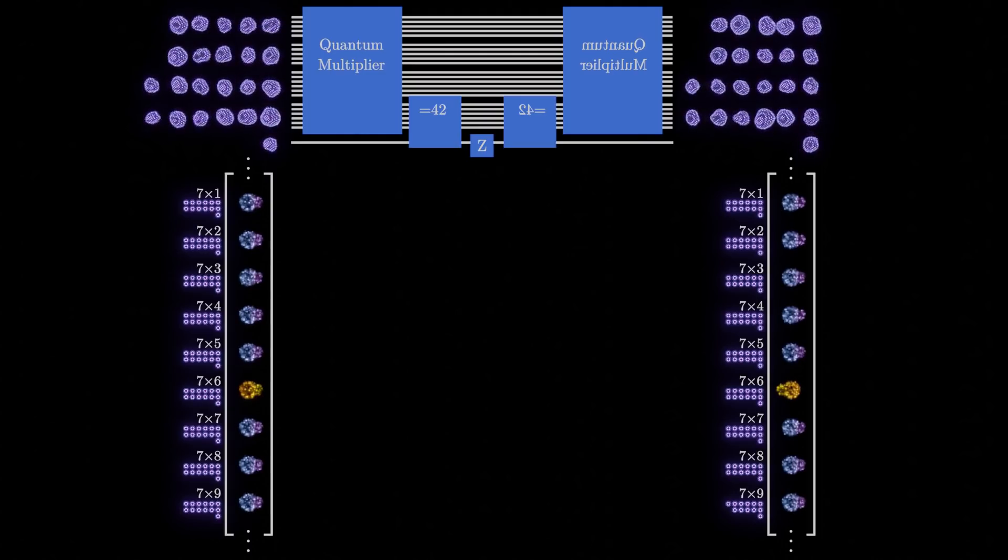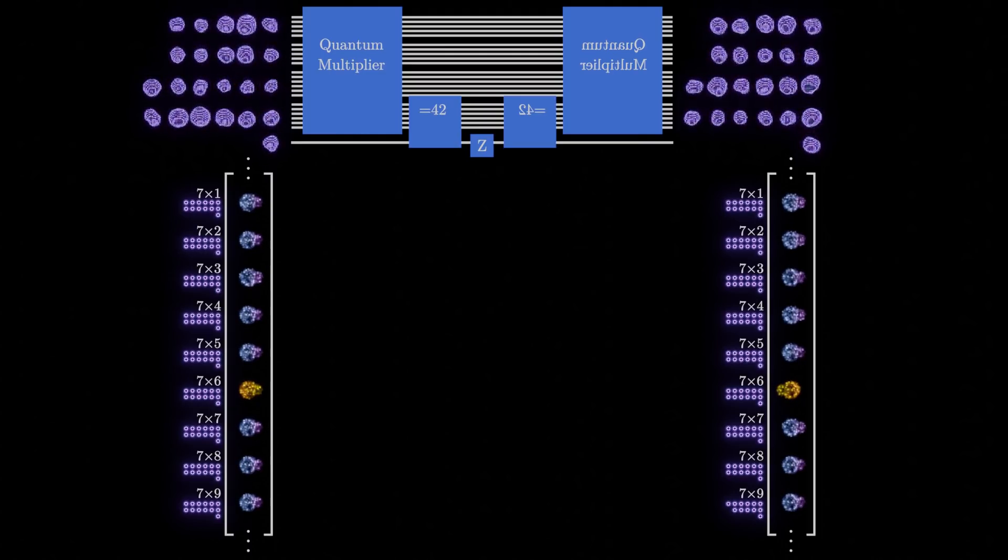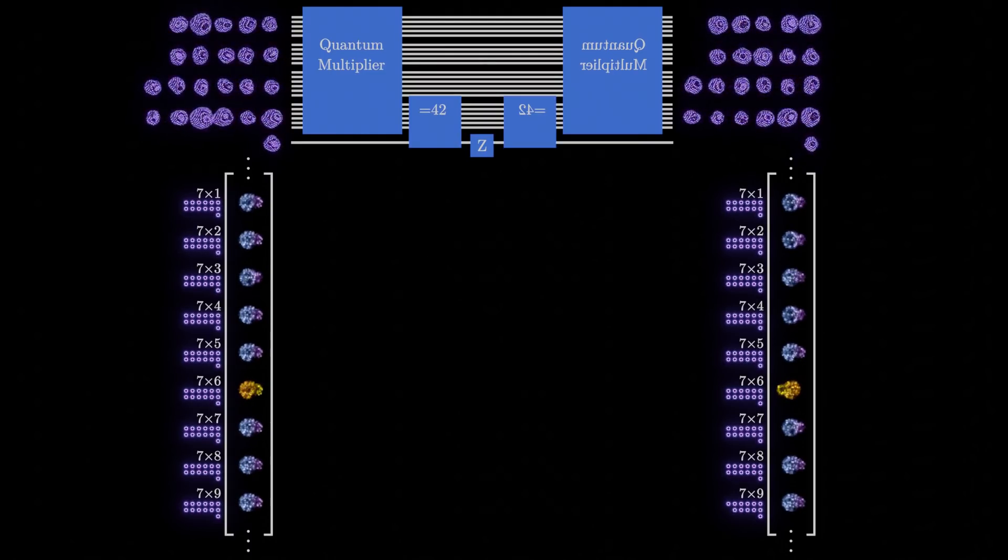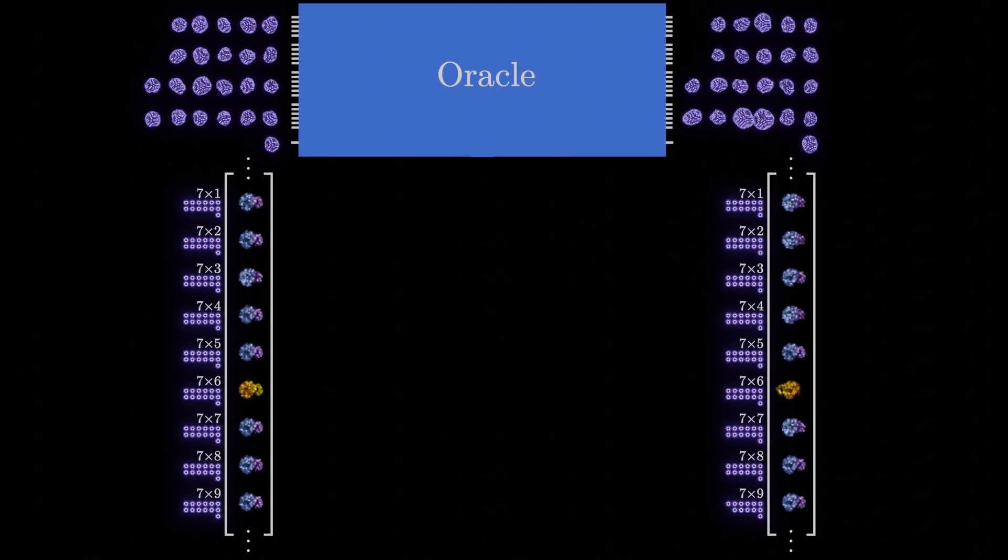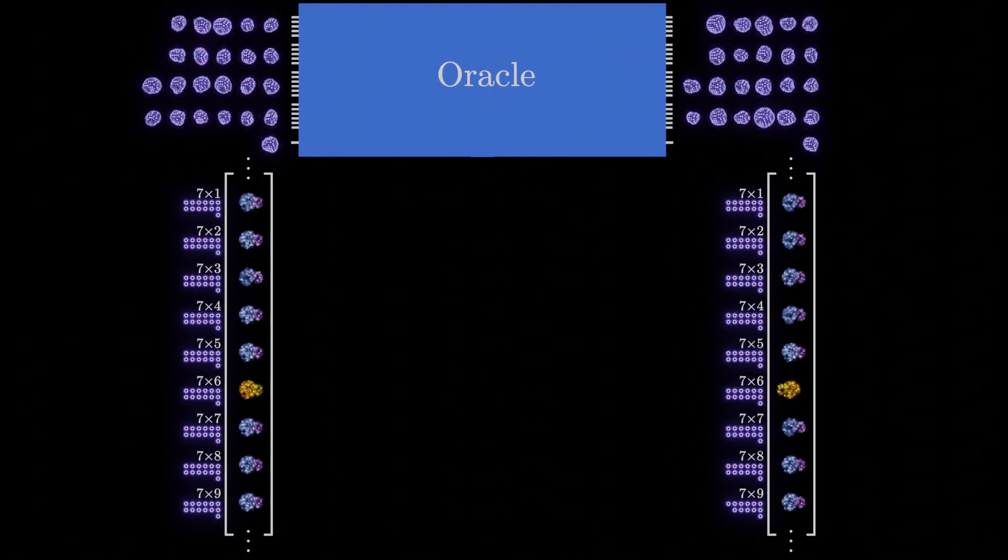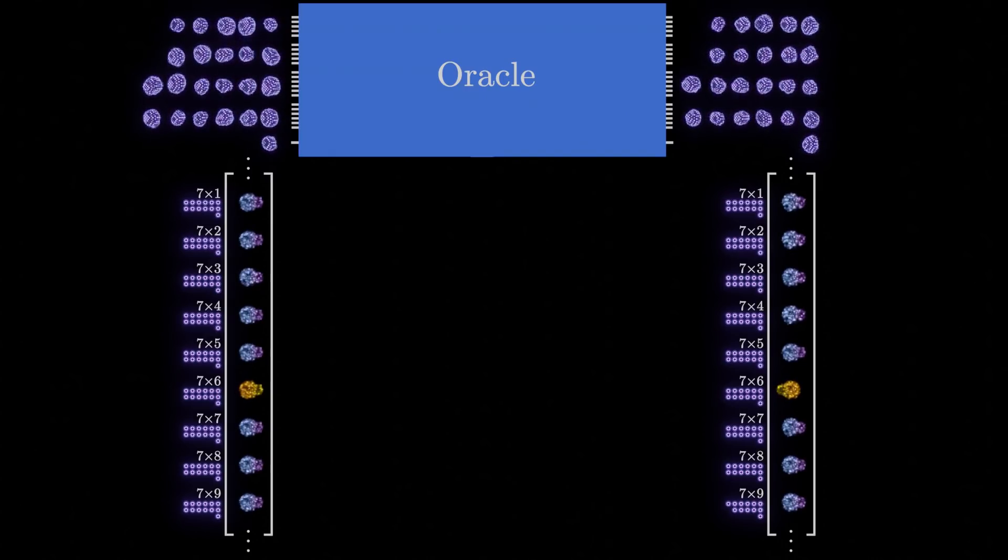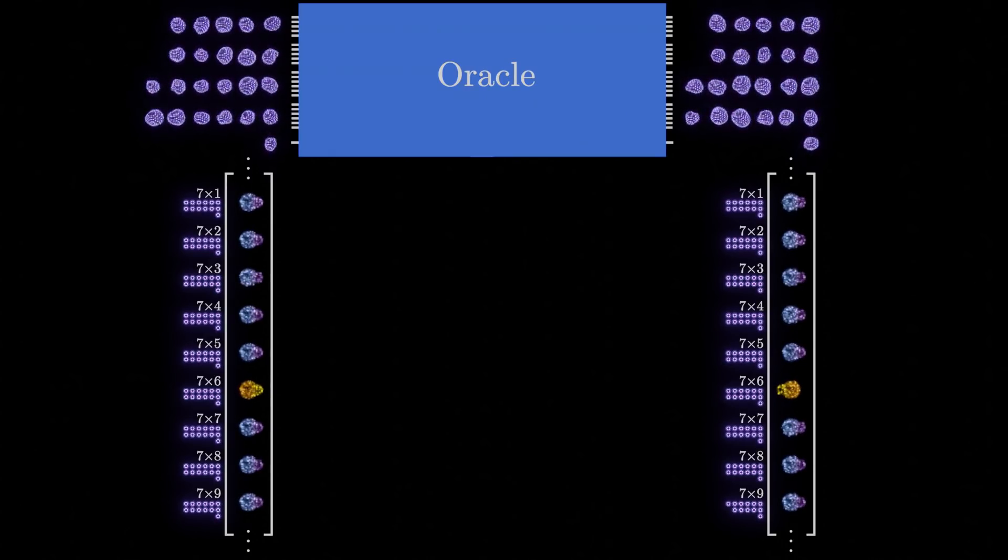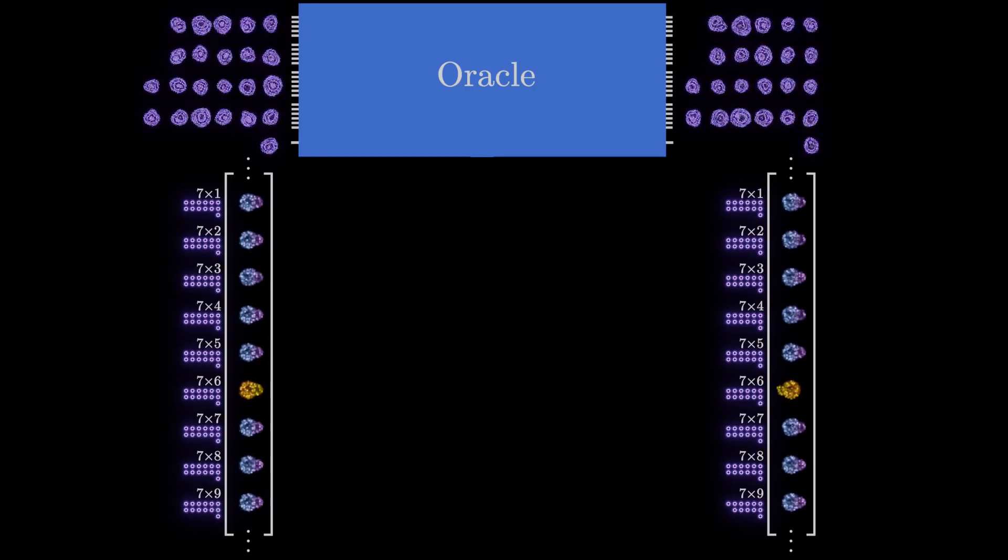Now that we have a circuit that satisfies the first part of Grover's algorithm, we can treat it like a black box, in this case called an oracle. If we pass in any state vector, it will flip the phases of the states we are interested in. In this case, those states are ones that represent numbers that multiply to make 42.